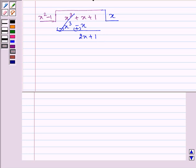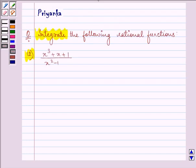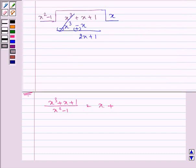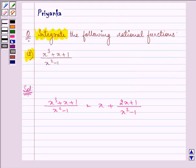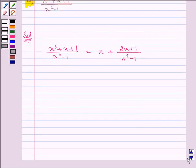So we can write this given function as (x³ + x + 1)/(x² - 1) equals x + (2x + 1)/(x² - 1). Further, now we need to simplify this function separately.